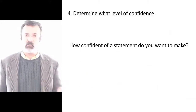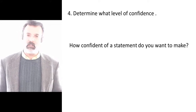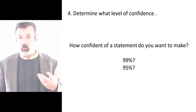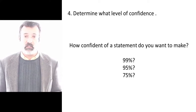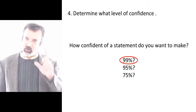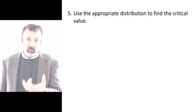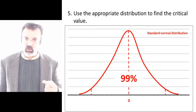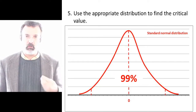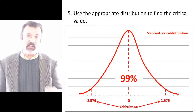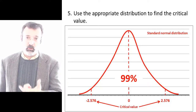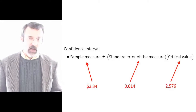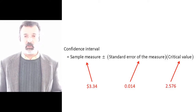Next we have to decide what level of confidence we want — that is, how confident a statement do we want to make. Typical confidence intervals are made at the 99% or 95% confidence level, though you could also make a statement at a 75% confidence level or any other level you choose. Let's suppose we want to make a 99% confidence statement. We take a standard normal distribution and split it into three parts where the center part contains 99% of the distribution, and ask: what critical values divide the distribution in this way? In this case, the critical values plus and minus 2.576 divide the standard normal distribution like this. I now have all the ingredients to construct the confidence interval: my sample measure is 3.34, the standard error is 0.014, and the critical value is 2.576.